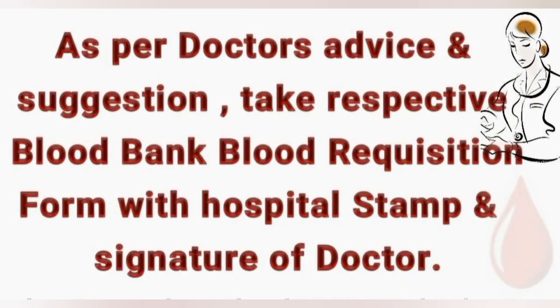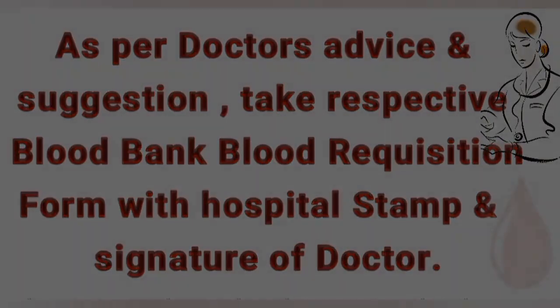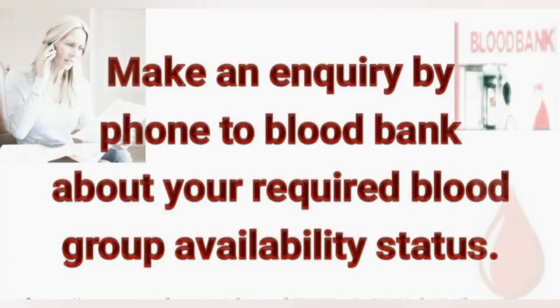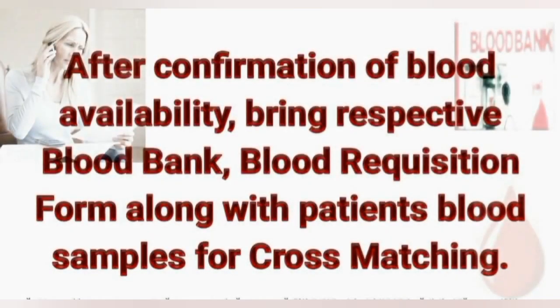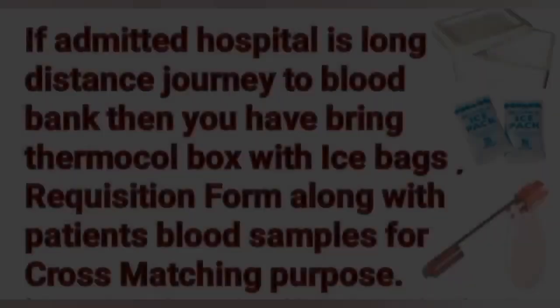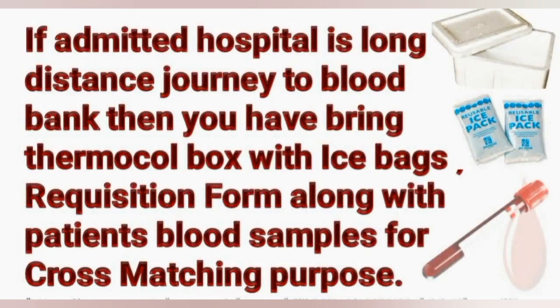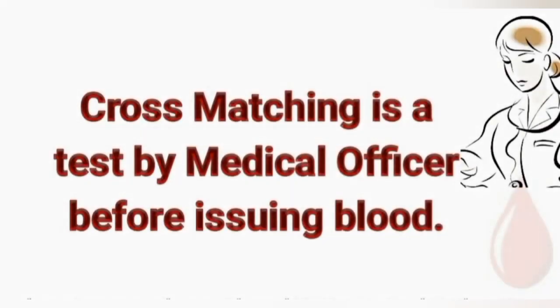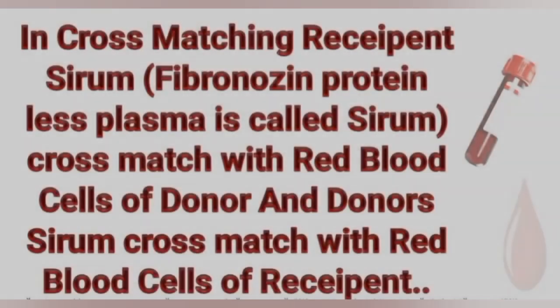Blood requisition and issue process. As per the doctor's advice, take the respective blood bank blood requisition form with a hospital stamp and the doctor's signature. Make an inquiry by phone to the blood bank about your required blood group availability status. After confirmation of blood availability, bring the requisition form along with the patient's blood samples for cross-matching purposes. Cross matching is a test performed by a medical officer before issuing blood.